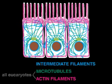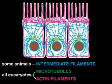Although all eukaryotic cells contain microtubules and actin filaments, intermediate filaments are found only in vertebrates and a number of other soft-bodied animals.